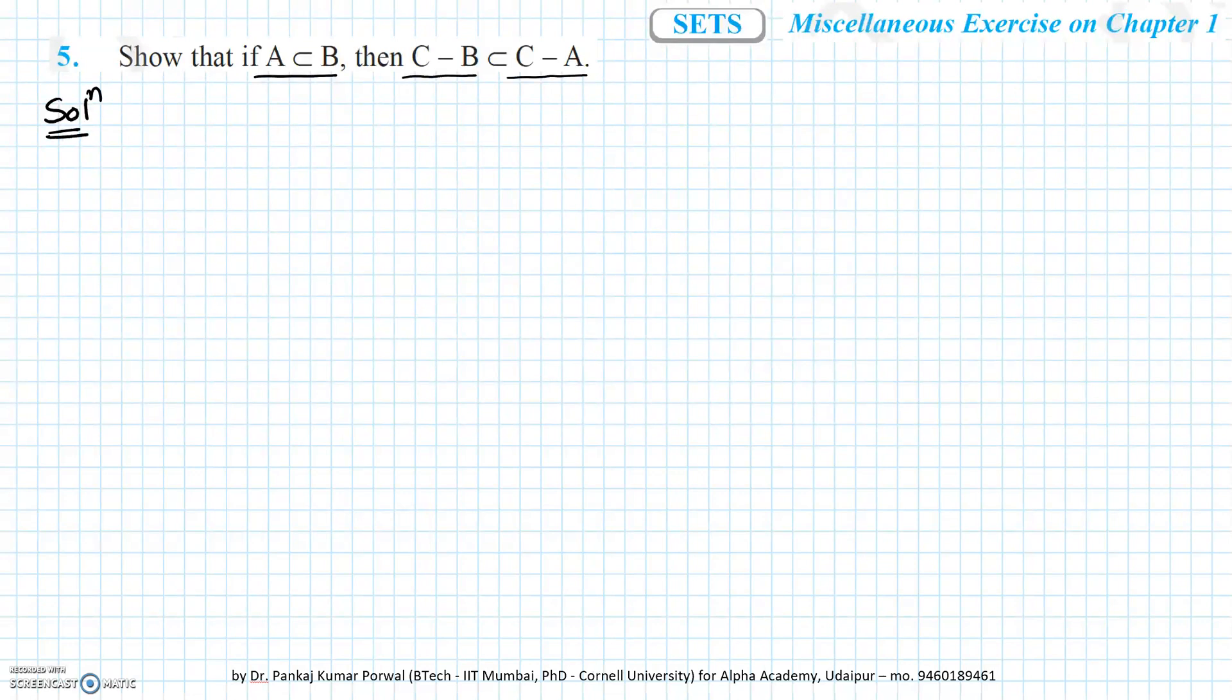First thing that we identify is what is given. As given, A is subset of B and we need to prove C minus B is subset of C minus A for any C.